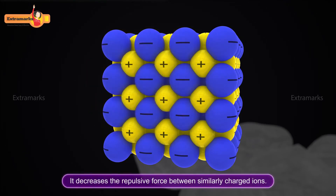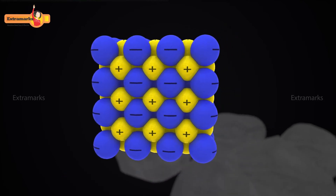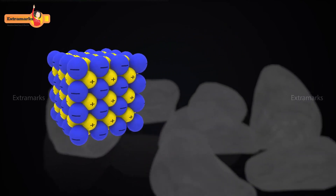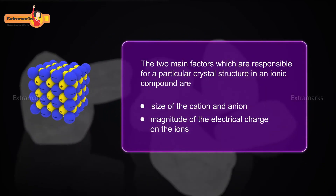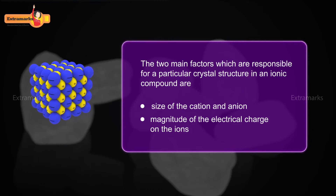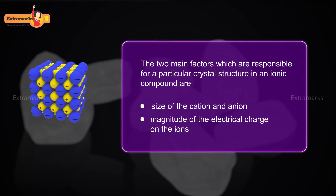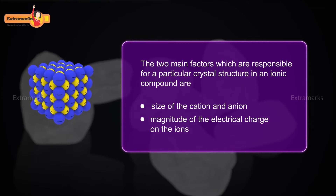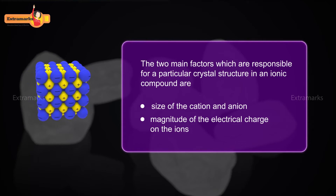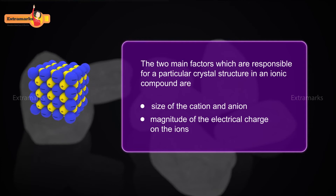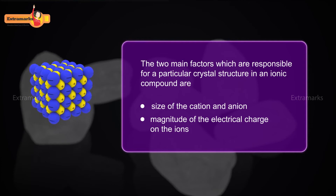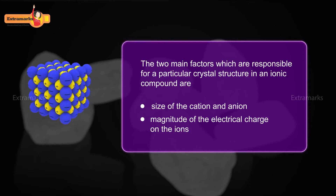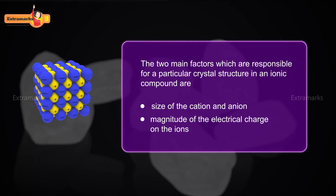This arrangement decreases the repulsive force between similarly charged ions. The two main factors responsible for a particular crystal structure in an ionic compound are the size of the cation and anion, and the magnitude of the electrical charge on the ions.